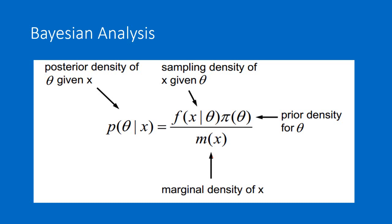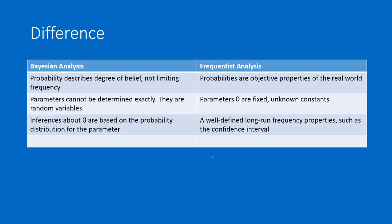The basic differences between Bayesian and Frequentist analysis are: In Bayesian analysis, probability describes degree of belief, not limiting frequency, whereas in Frequentist analysis, probabilities are objective properties of the real world. In Bayesian analysis, parameters cannot be determined exactly — they are random variables that can change with new information — whereas in Frequentist analysis, parameters theta are fixed and unknown constants. In Bayesian analysis, inferences about theta are based on the probability distribution of the parameters, whereas in Frequentist analysis, well-defined long-run frequency properties such as a confidence interval are used to understand the properties of the parameters.